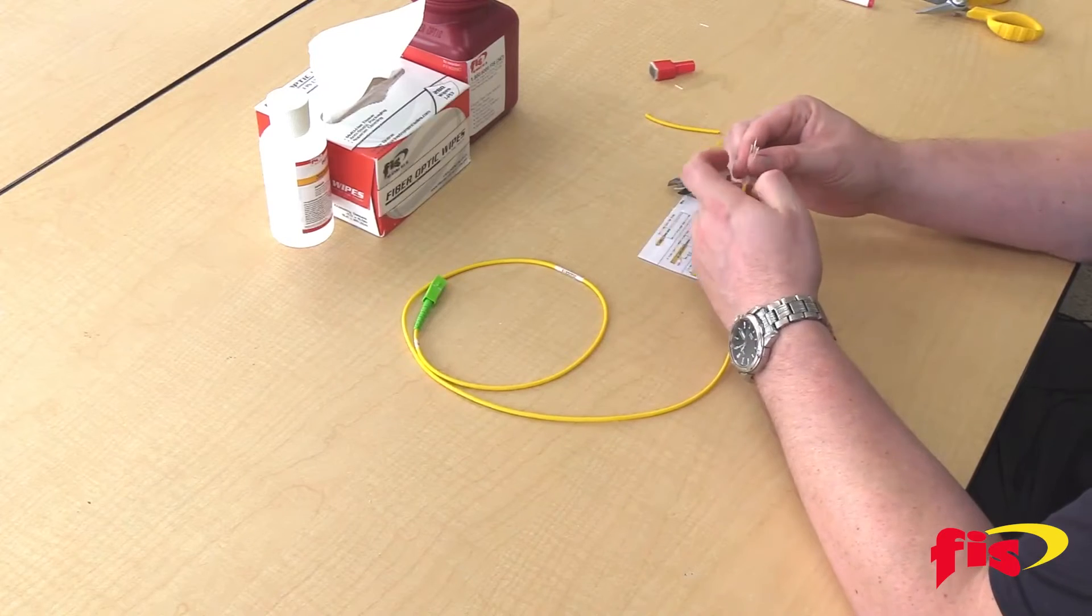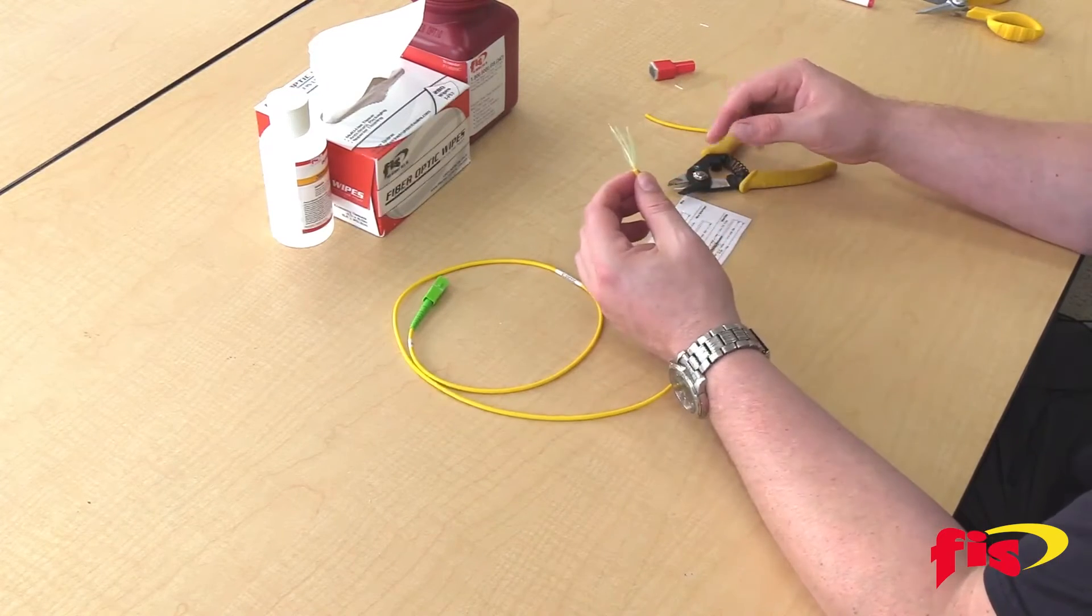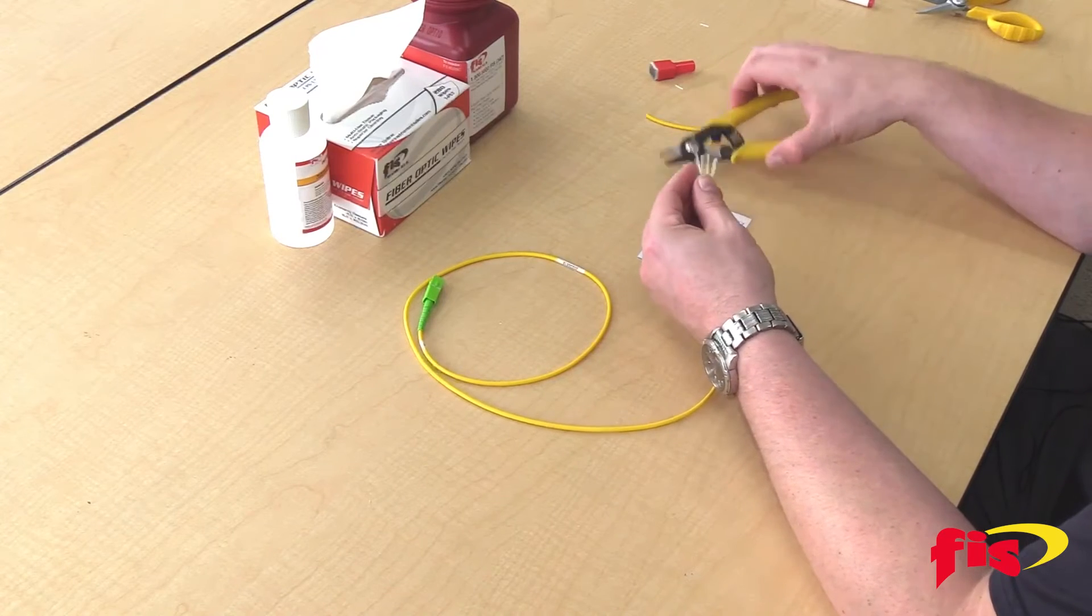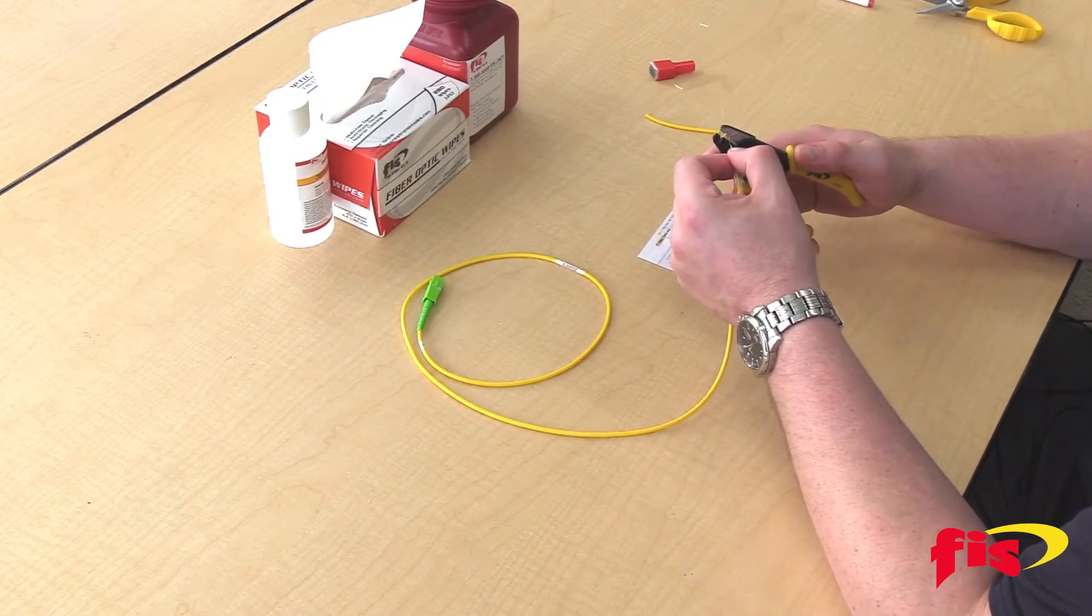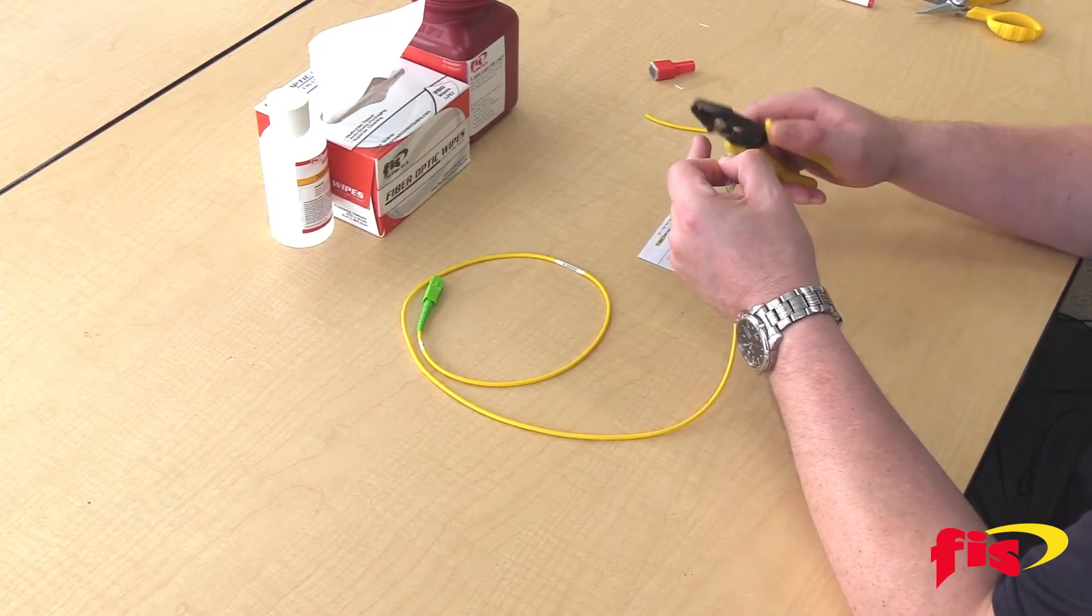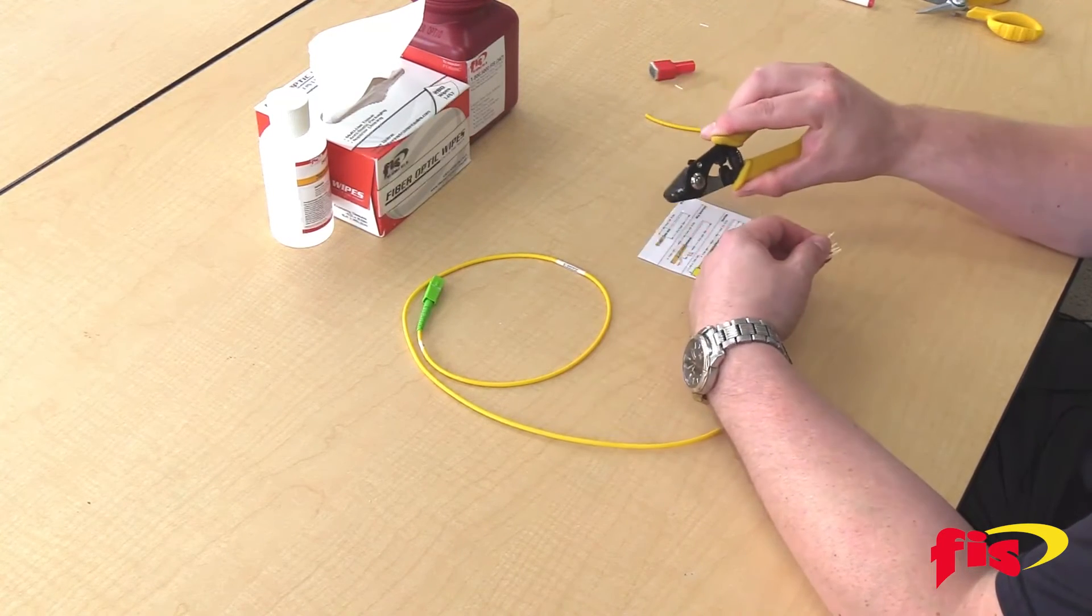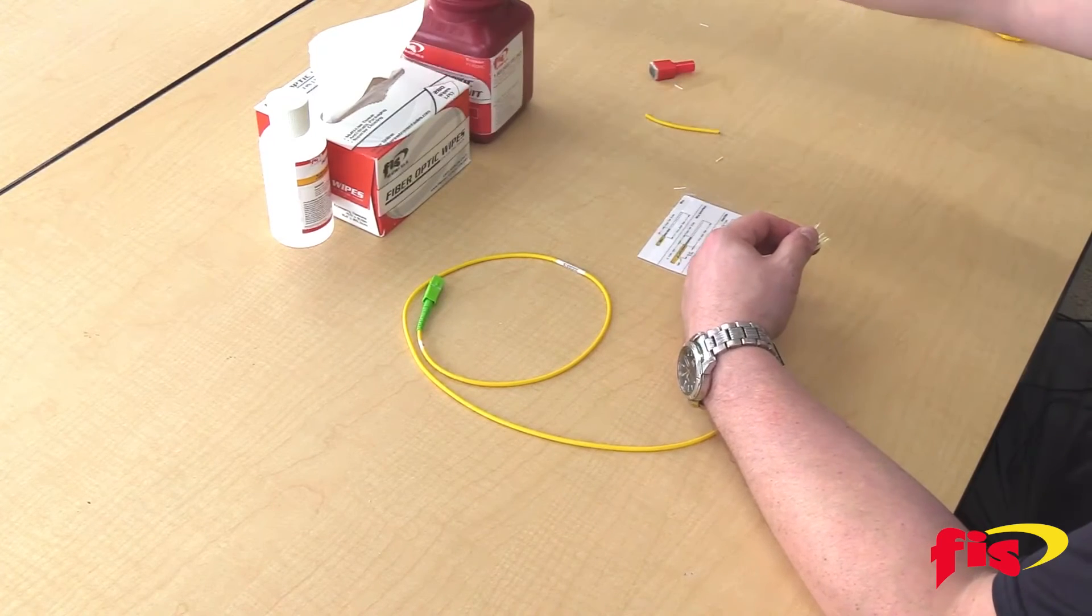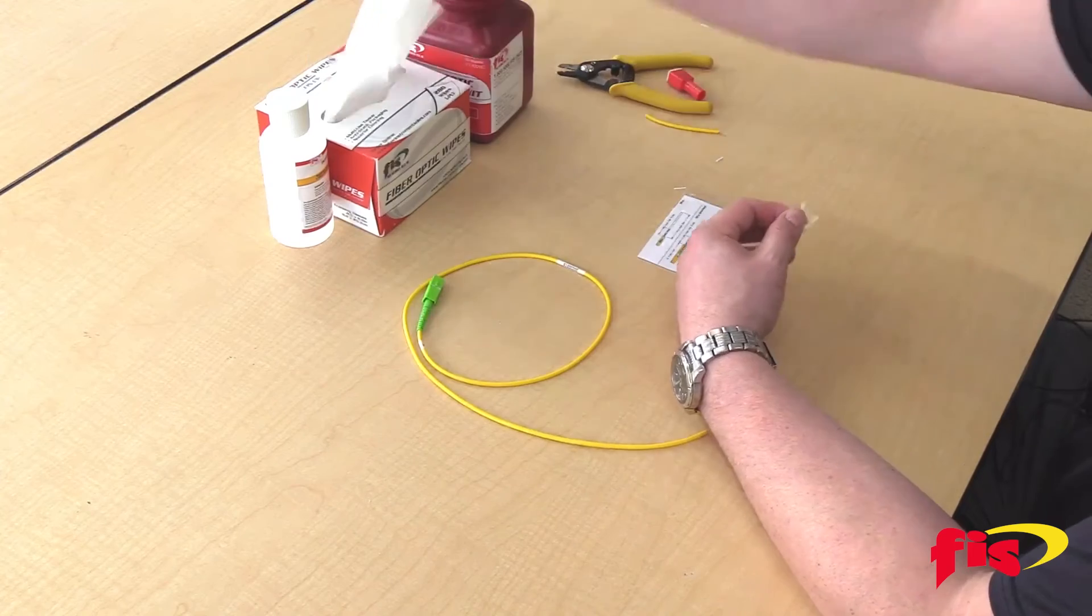Now that I've stripped off my tight buffer, I have my acrylic coating remaining. I'm just going to take my stripper with the smallest bottom hole here and strip off the acrylic coating in one clean swipe, just like so. As you can see, there's a little bit of plastic dust out of my stripper. Clean it.